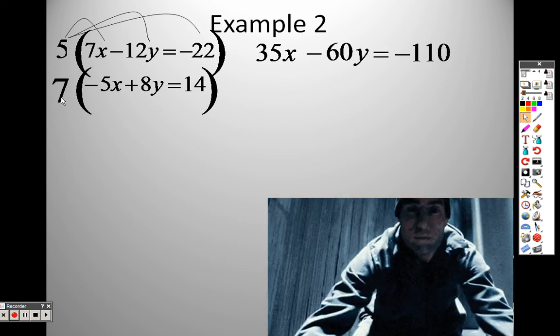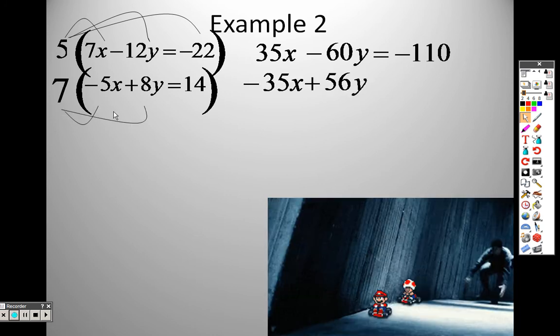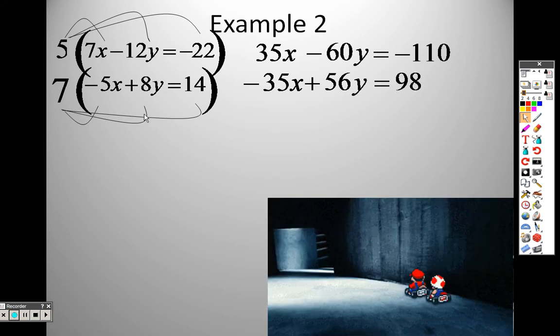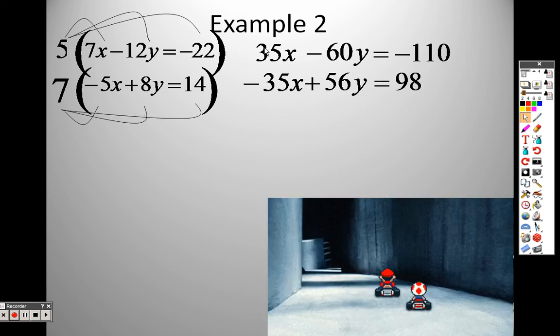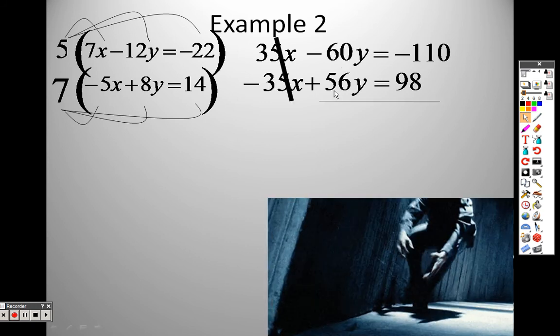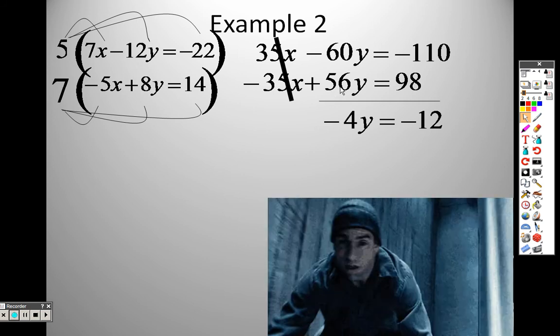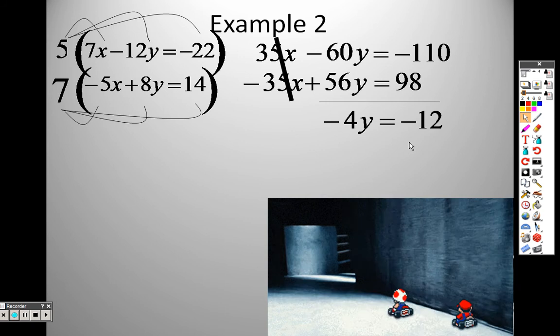On the bottom, 7 times negative 5, negative 35. 7 times 8, 56. 7 times 14, 98. These x's now cancel out. When I add them together, 35 and negative 35, gone. Negative 60 and 56, negative 4y. And when I add these together, negative 110 and 98, I end up with negative 12.